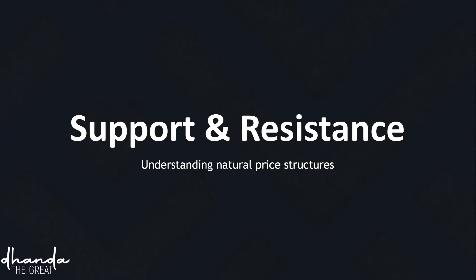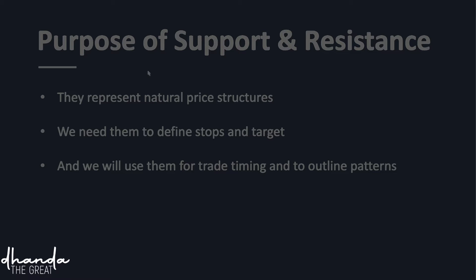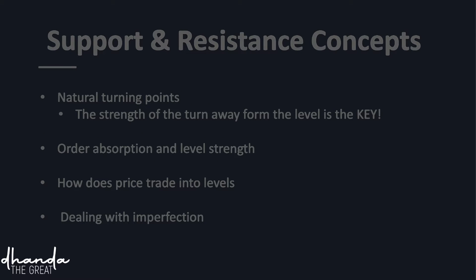First of all, we need to talk about support and resistance. Don't worry — I will not bother you with the general support and resistance stuff that you have probably read hundreds of times. This is going to be very different and very helpful. Support and resistance are natural price structures on our charts — usually horizontal levels and lines. We need them to find our stops and targets, and we will use them for trade timing and to define our trading patterns.